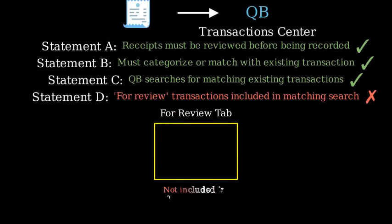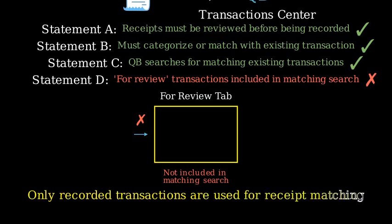The For Review tab contains transactions that haven't been added to the books yet. When QuickBooks searches for matches, it only looks at transactions that are already properly recorded in the system. Therefore, transactions in the For Review tab are not included in this matching process. Remember that only fully recorded transactions are considered when looking for matches with newly uploaded receipts.